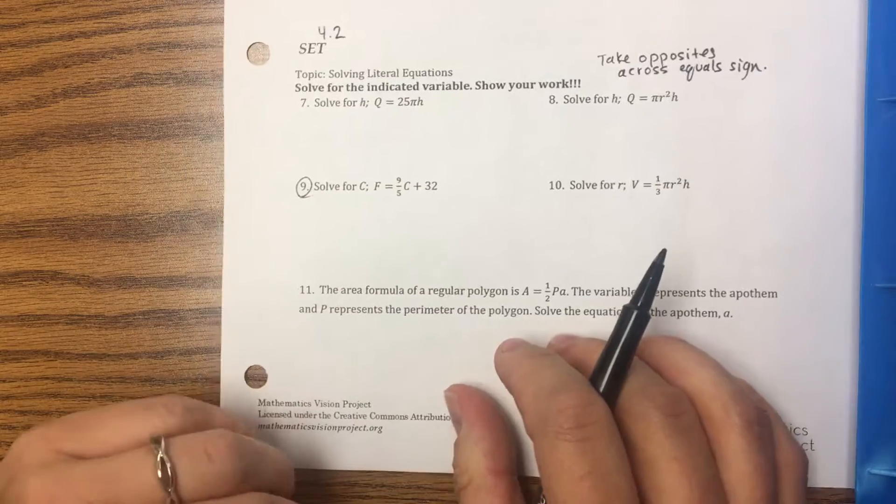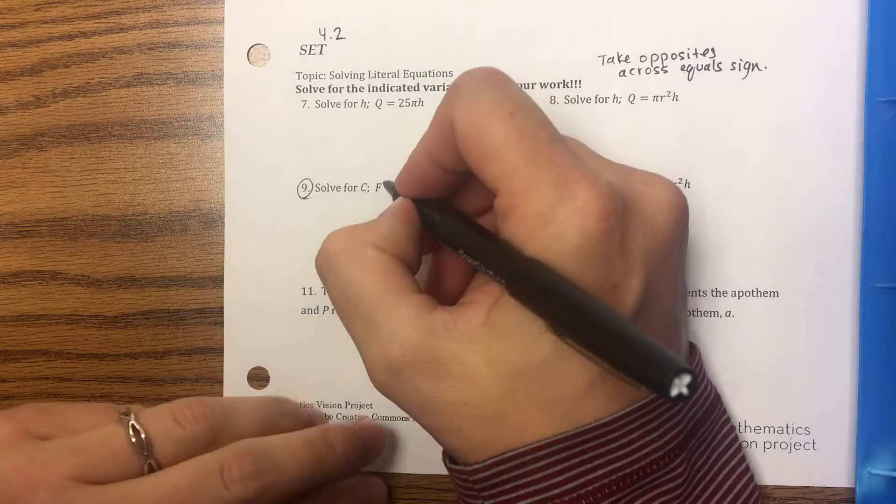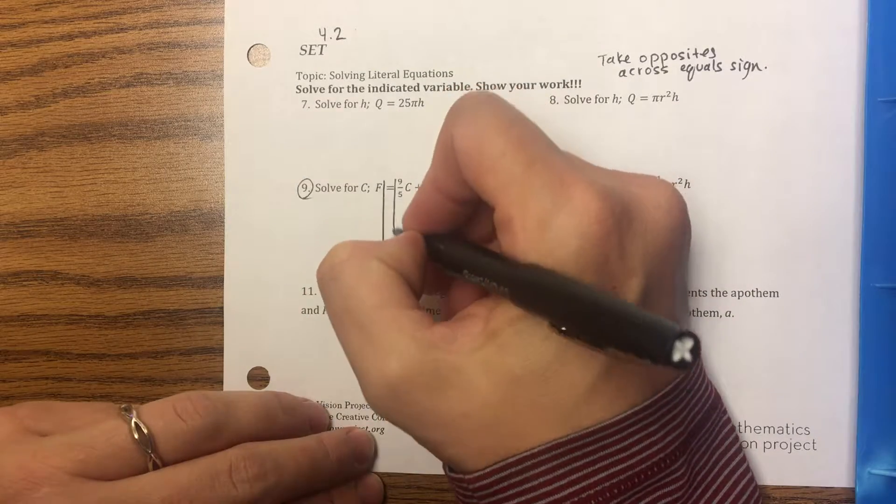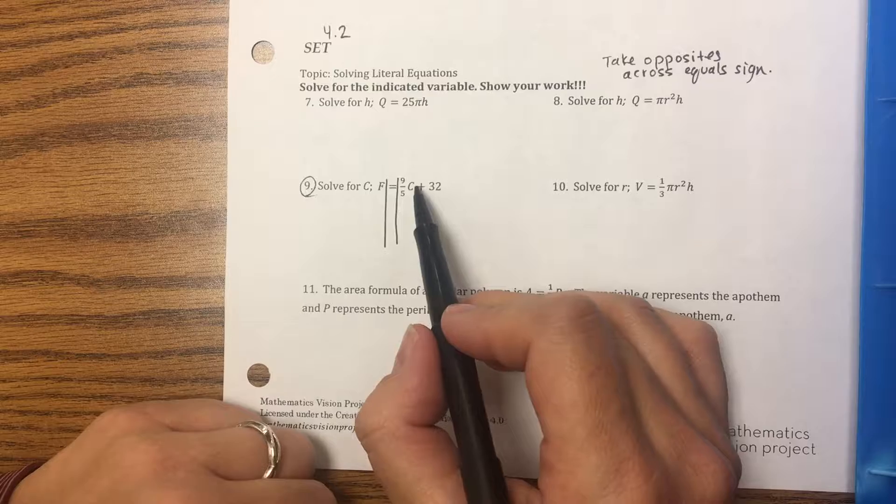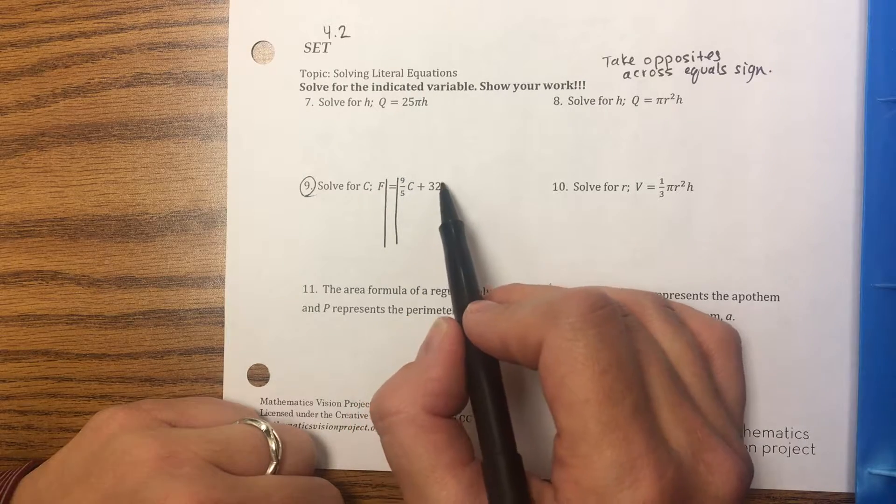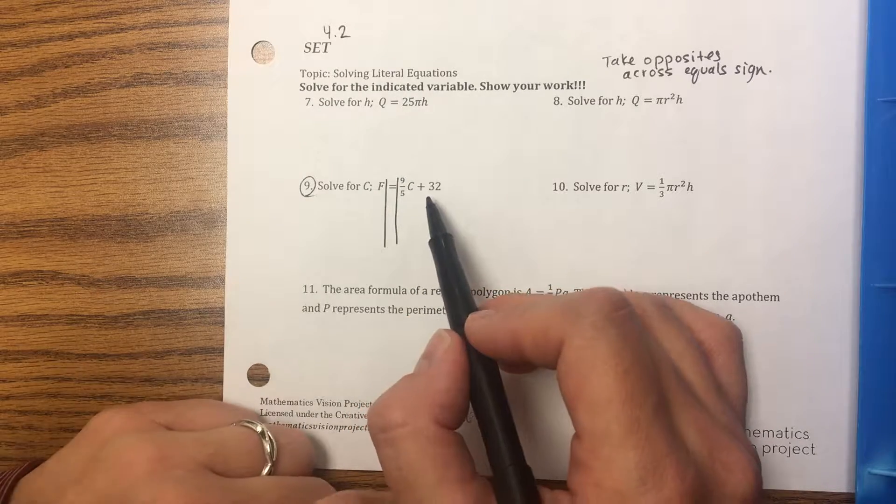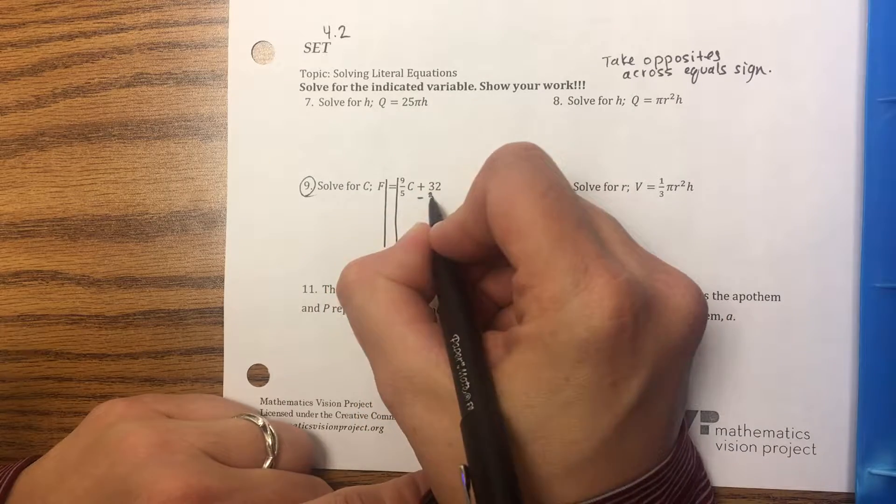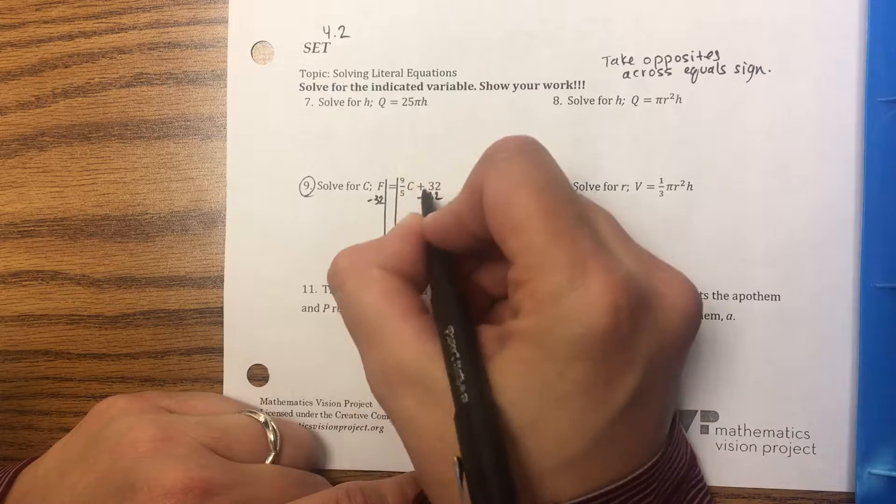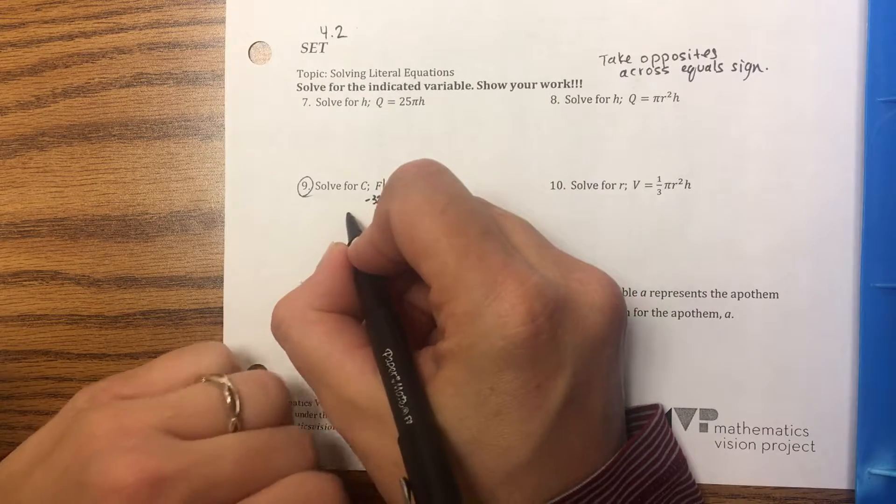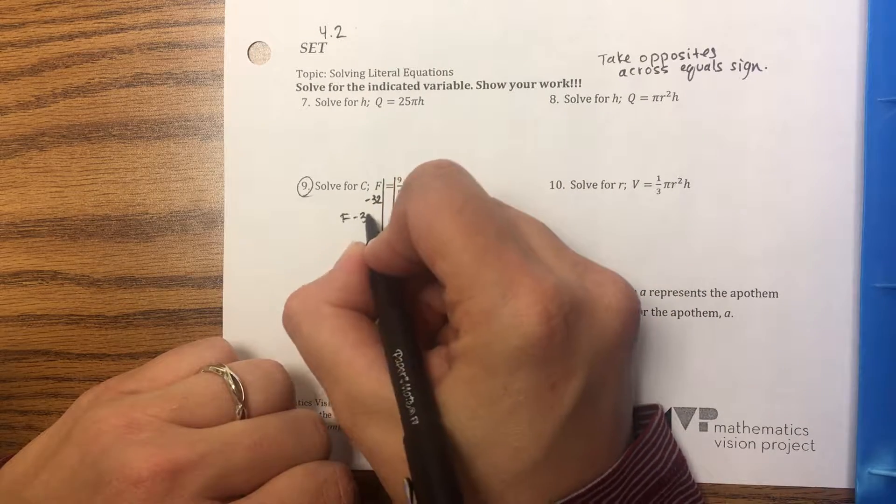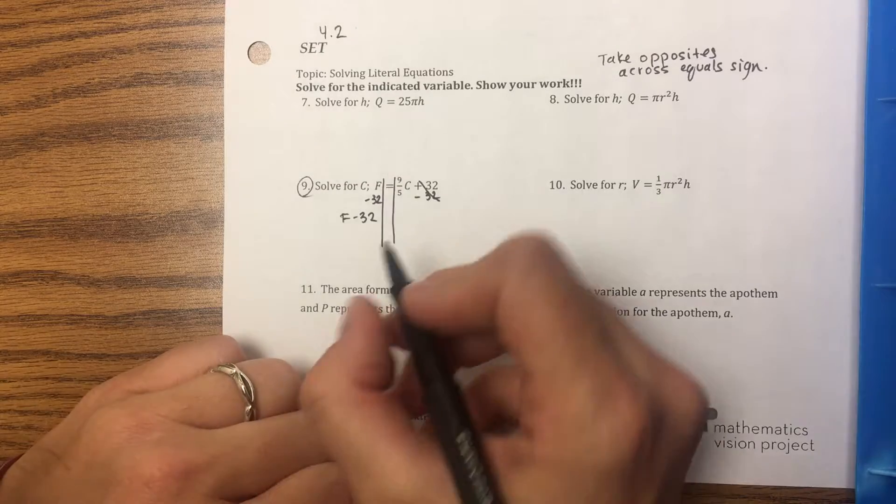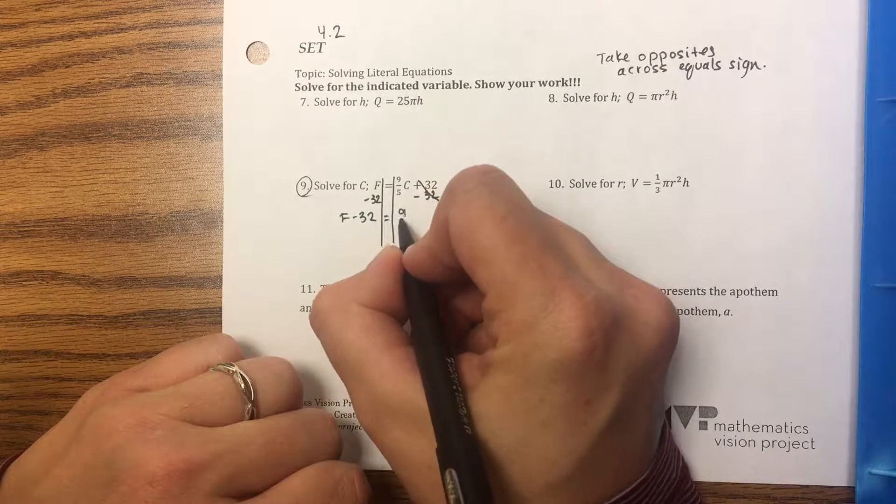Let's do number 9. I want to solve for C, so I want to get C by itself. First thing I'm going to go far away from C and get rid of this 32. Right now it's a positive 32, so the opposite would be to minus 32.